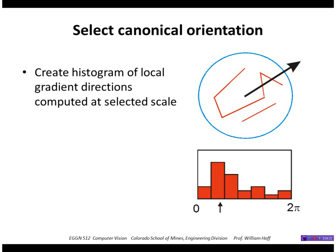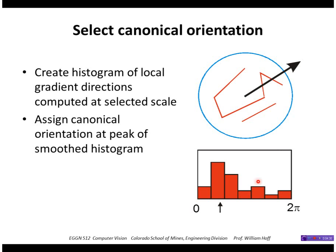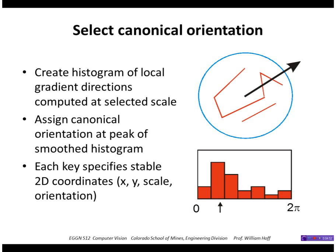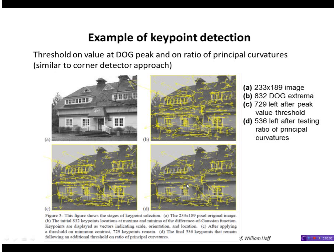To extract features around each key point, we compute a histogram of the local gradient directions at the scale where the peak was found. The dominant gradient direction in the neighborhood is assigned as the angle of that whole patch. This removes the rotational uncertainty from the feature points, giving us the XY location of the key point, its scale, and its orientation.